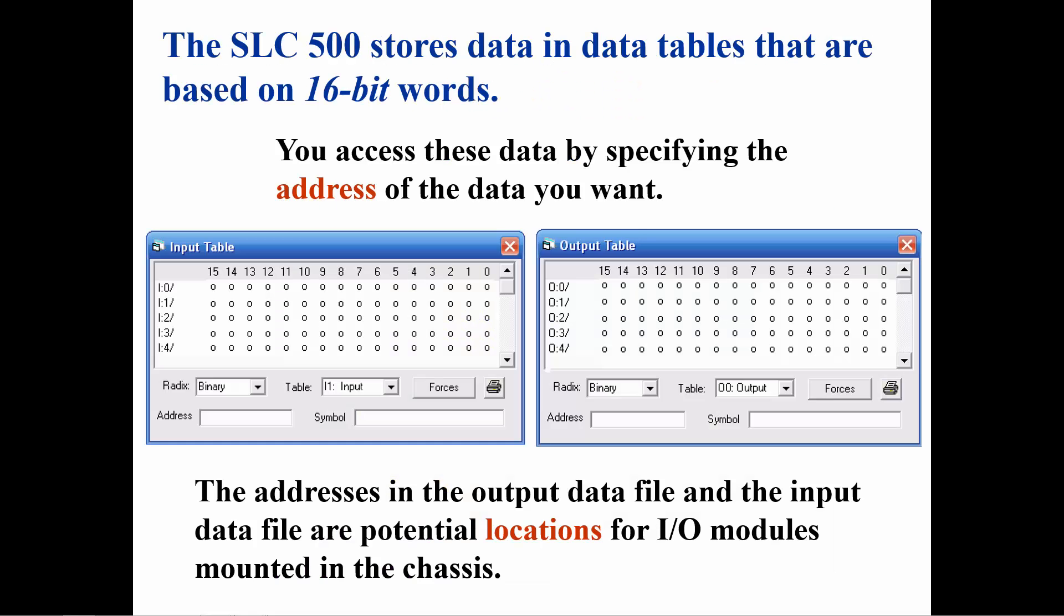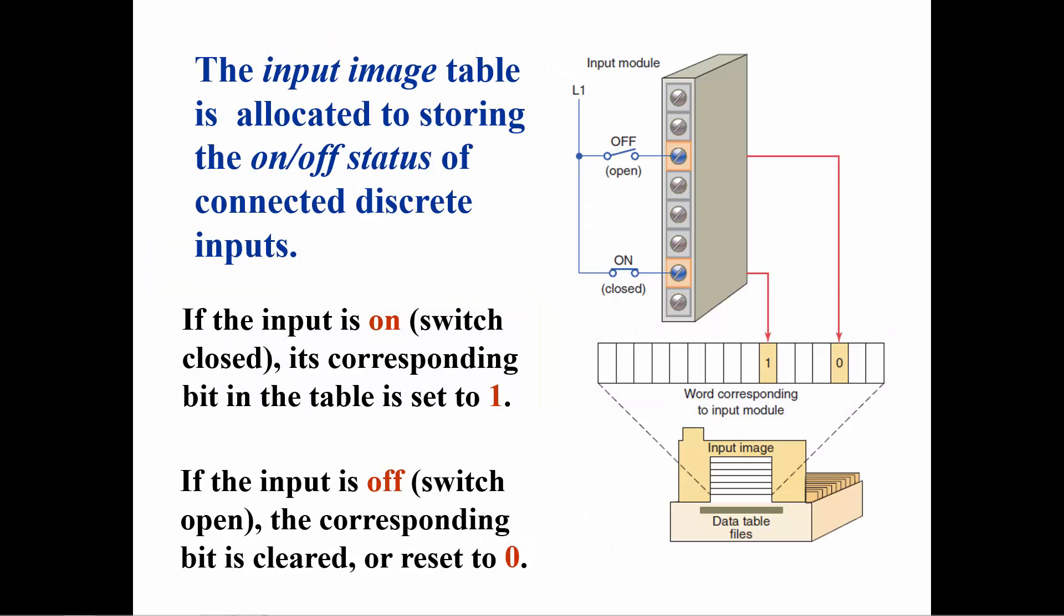You can look at the status of the inputs in the PLC software by looking at the input table. You can tell if an output should be on or off by observing the output table. The input table will have a 1 if the switch connected to that address is closed and a 0 if the switch is open.